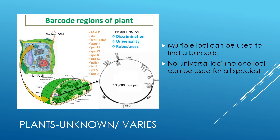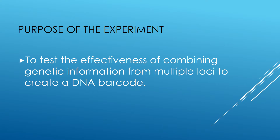For plants, however, no one locus has been identified that contains enough variation between species to be used universally as a barcode. Often, a trial and error approach must be taken to isolate a barcode from an unknown species, meaning multiple tests must be conducted on the sample before one is successful, making the process highly unreliable. It is for that reason I chose to experiment with isolating multiple loci, or different gene locations, to be used to create a barcode. It was my belief that by combining genetic information from different loci, there would be enough variation between species to accurately identify unknown samples.